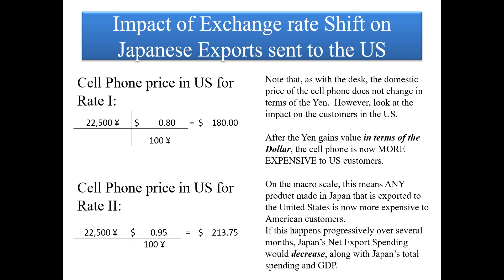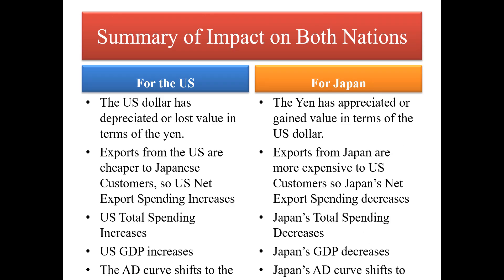By virtue of this seemingly small shift in exchange rates, that single cell phone is now $33.75 more expensive than before. And it's not just that product — any consumer electronics, automobile parts, anime and manga, or specialized products like wasabi exported from Japan to the United States is now more expensive to American customers. The law of demand says if something is more expensive you buy less of it, so Japan will see a decrease in net export spending, a decrease in total spending, and a decrease in GDP.